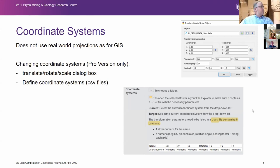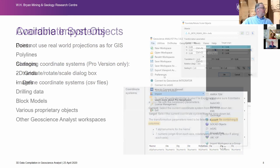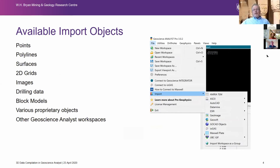One important thing to talk about is coordinate systems. Geoscience Analyst is different from a GIS in that it doesn't work on real-world projections — it essentially works on a Cartesian plane where X and Y do not change with distance. In the Pro version, you can convert objects from one grid coordinate system to another, but that's only in the Pro version.